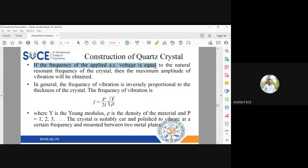The frequency of AC voltage is equal to the resonant frequency, then the maximum amplitude is obtained. The frequency of oscillation is given by this formula: f equals p by 2l root of y by rho.